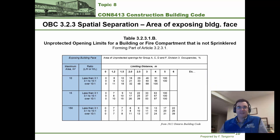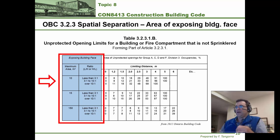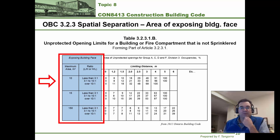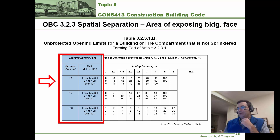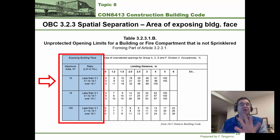On the left-hand side of the table you have two columns relating to the building face itself. The left portion is the maximum area of that face in square meters. The right column is the ratio L over H or H over L, with three rows: less than 3 to 1, 3 to 1 to 10 to 1, and over 10 to 1. We'll work through how to use it together.